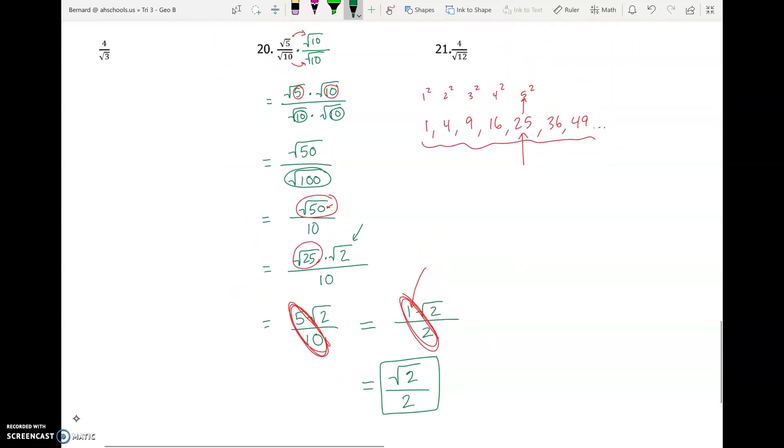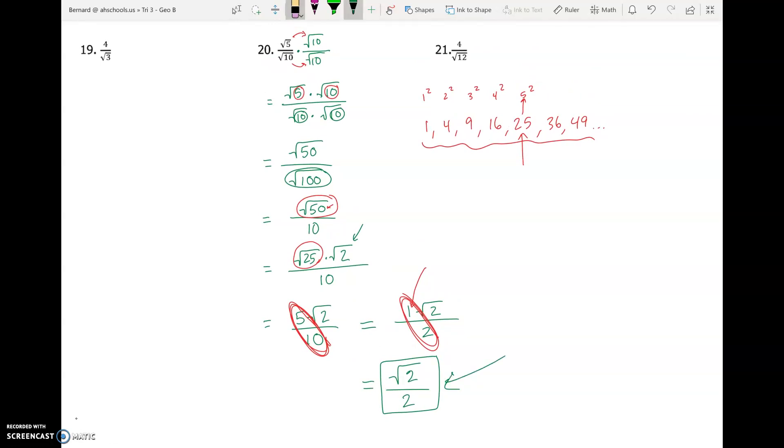And if you want to just double-check your work, type square root of 2 divided by 2 into your calculator. And then also go ahead and type the original problem, square root of 5 divided by square root of 10. And you should see the exact same decimal.